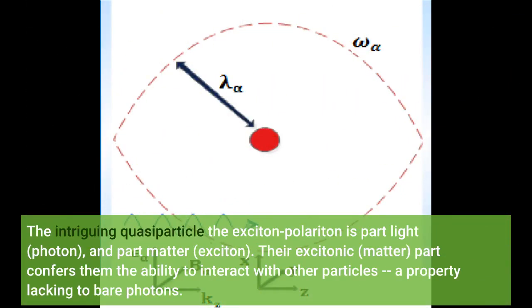The intriguing quasi-particle, the exciton polariton, is part light (photon) and part matter (exciton). Their excitonic matter part confers them the ability to interact with other particles, a property lacking in bare photons.